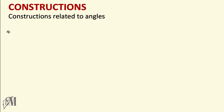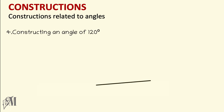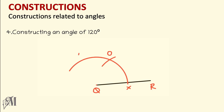The next part is how to construct an angle of 120 degrees. Draw any line QR. Bring the compass to Q and draw a slightly longer arc, naming the intersection with the line X. Without changing the length, cut the arc at O. Bring the compass to O and draw another arc. Join Q to P. You have now constructed an angle of 120 degrees.